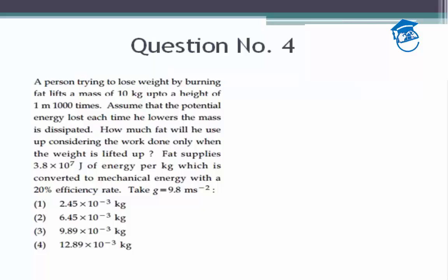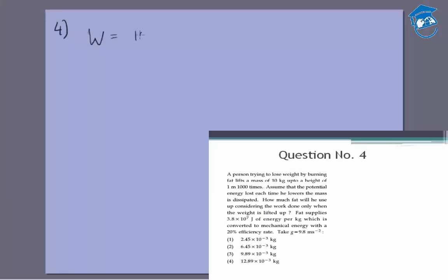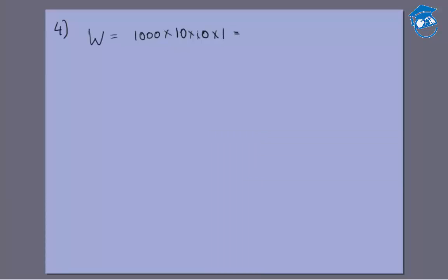So the total work done will be a thousand times mgh. The mass is 10 kg, g is 10, and the height is 1 meter, so it comes out to be 10 to the power 5.